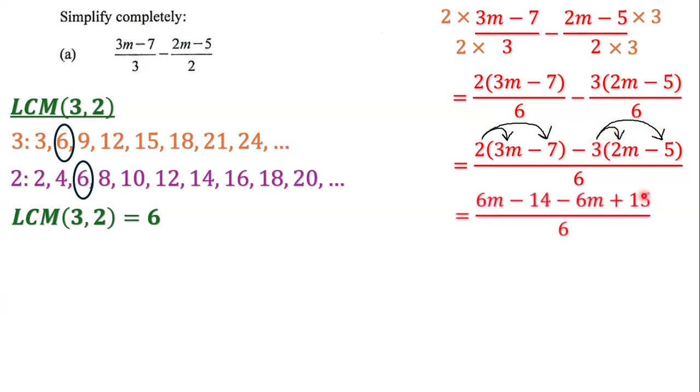Now we multiply. 2 times 3m is 6m, and 2 times negative 7 is negative 14. Negative 3 times 2m is negative 6m, and negative 3 times negative 5 is positive 15.